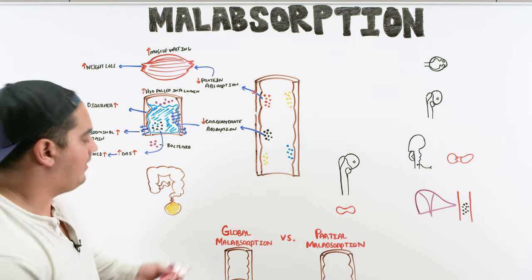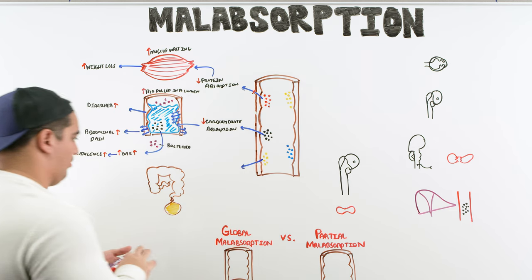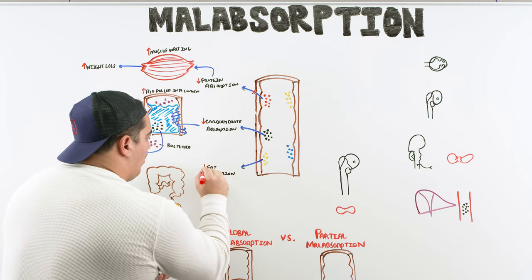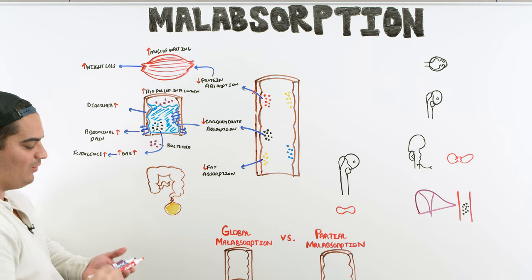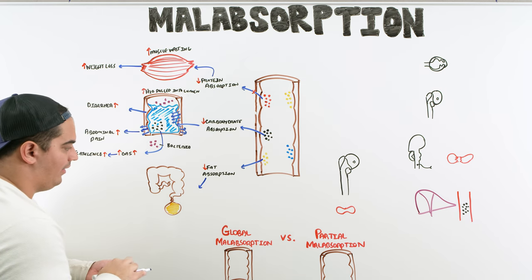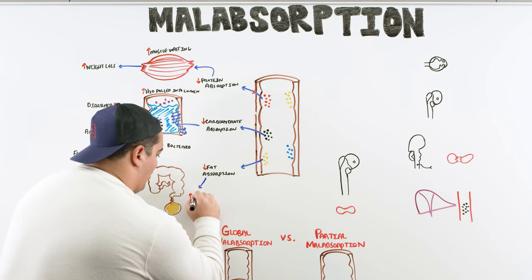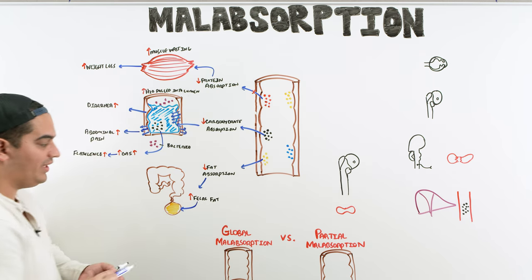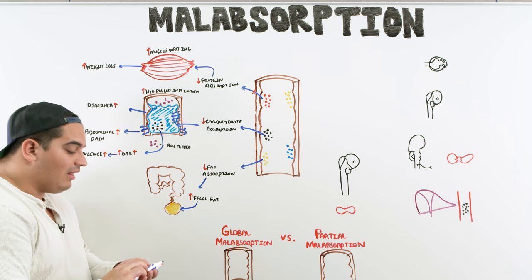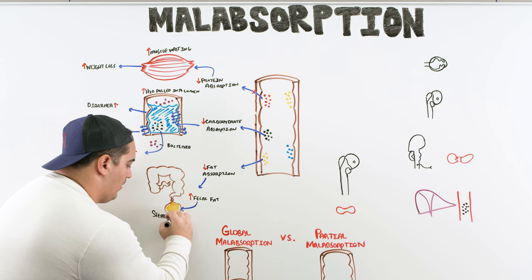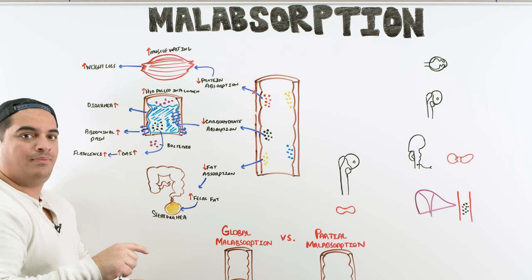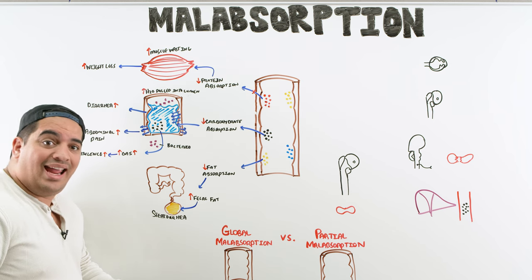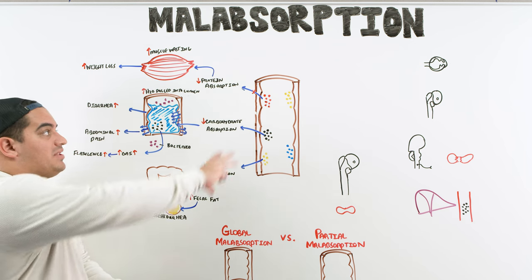Decreased fat absorption means lots of fat ends up in the stool — fecal fat. This causes stools to become super greasy and foul smelling, which is classically referred to as steatorrhea. Watch for a patient presenting with increasing weight loss, muscle wasting, diarrhea, intermittent abdominal pain, lots of flatulence, and greasy foul-smelling stools — all suggestive of potentially global malabsorption.